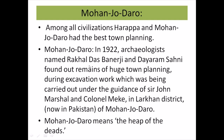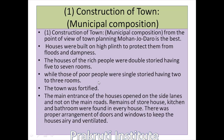The next point is Mohenjo-daro, which means 'a heap of the dead.' Among all ancient civilizations — Egyptian, Mayan, Chinese, and Indus — Harappa and Mohenjo-daro had the best town planning. In 1922, archaeologists Rakhaldas Banerji and Dayaram Sahani found remains of a huge town during excavation carried out under the guidance of Sir John Marshall and Colonel Mackay in the Larkana district, now in Pakistan. That is why it is known as Mohenjo-daro.